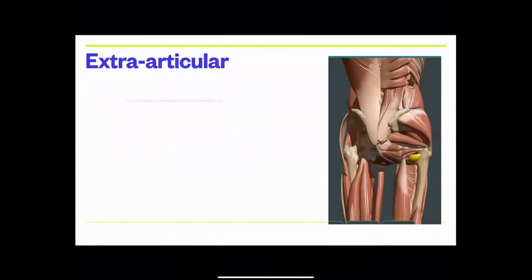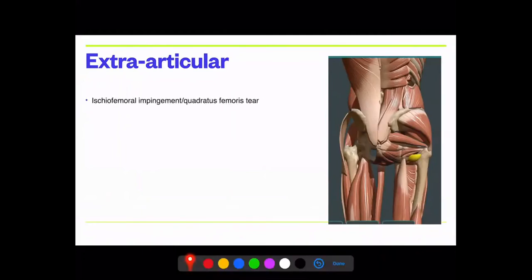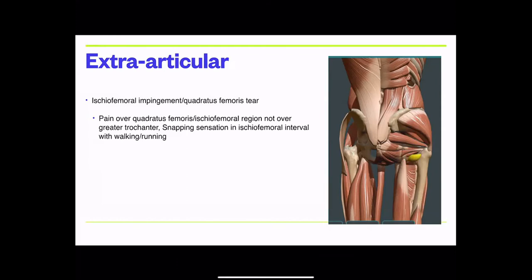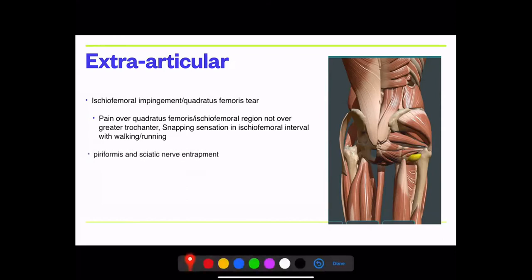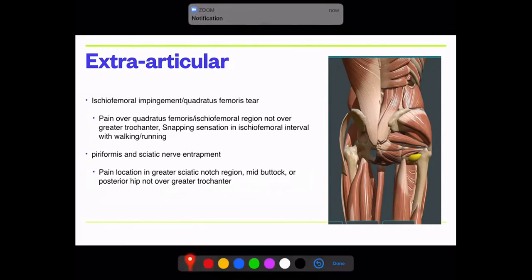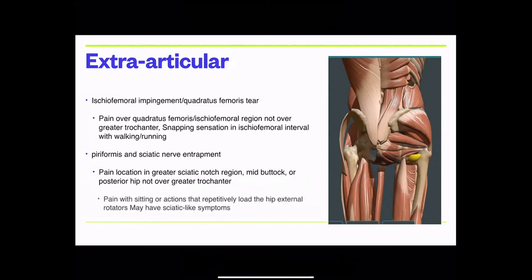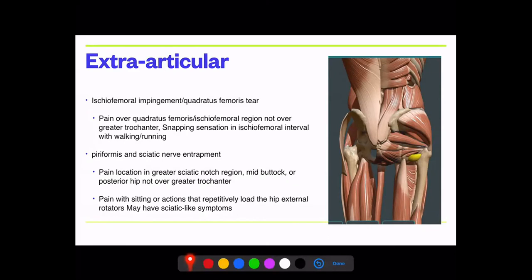For extra-articular pathology, we look at ischio-femoral impingement or quadratus femoris involvement. Pain over the quadratus femoris or ischio-femoral region would not occur with a glute med or glute min issue. Some patients have a snapping sensation over the ischio-femoral interval with walking or running. The piriformis nearby can also compress the sciatic nerve, causing different leg pain — usually not lateral.